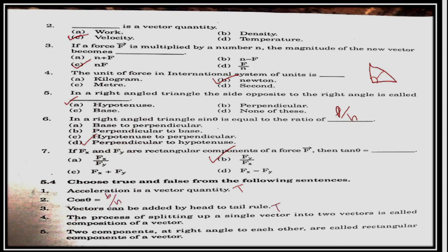Vectors can be added by head to tail rules. The process of splitting up a single vector into two vectors is called composition of a vector. No. The process of splitting up a single vector into two vectors is called resolution of a vector. Two components at right angle to each other are called rectangular components of a vector. True. Thank you.